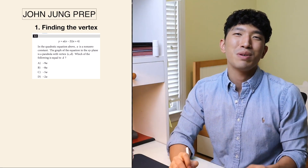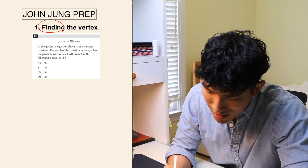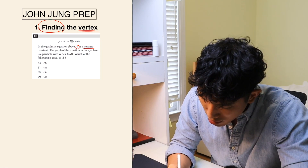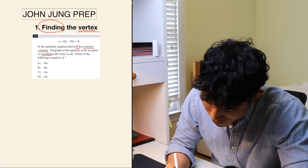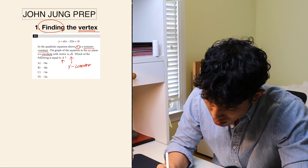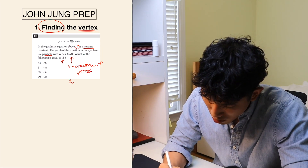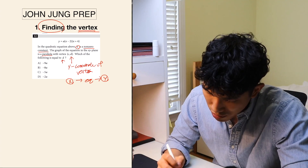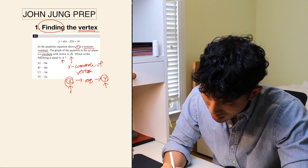As I mentioned in the previous video, Part 2 is going to be solely based on what you need to know about the vertex of a parabola. The first type is how to find the vertex of a parabola. Let's look at this question: in the quadratic equation above, A is a non-zero constant, and the graph in the xy-plane is a parabola with vertex (C, D). What is the value of D? D is the y-coordinate of the vertex.